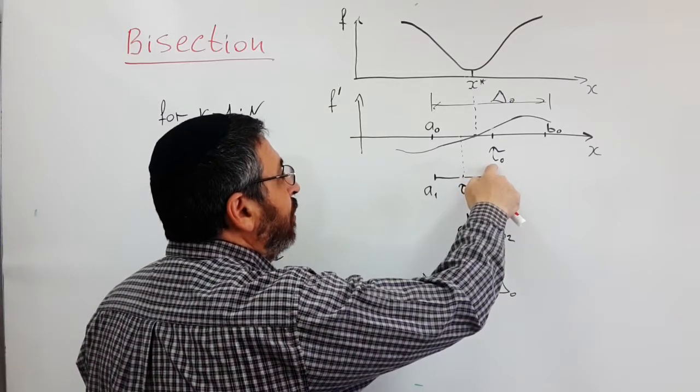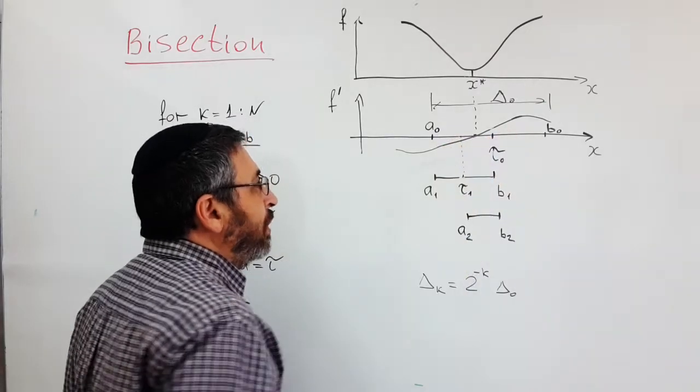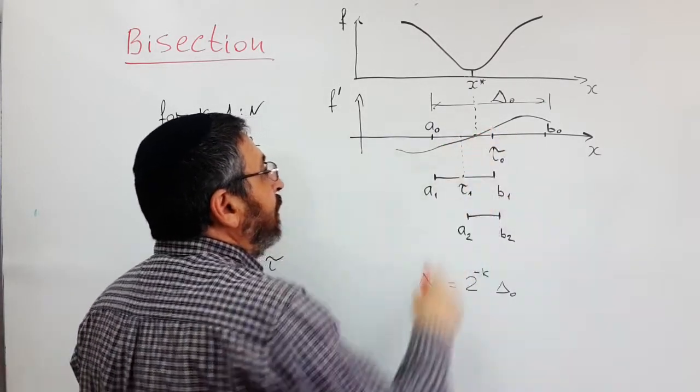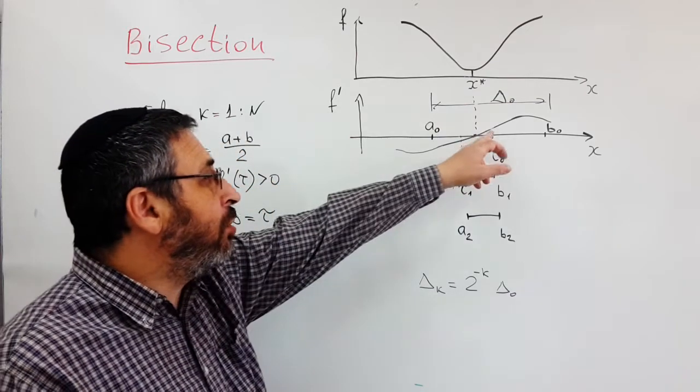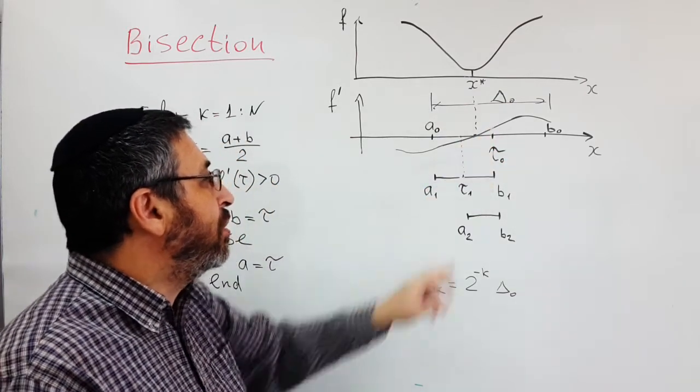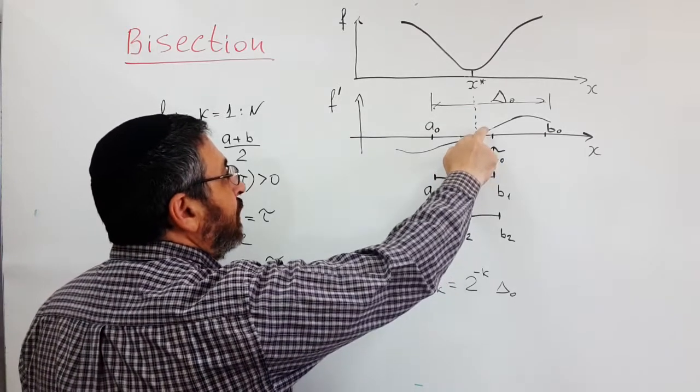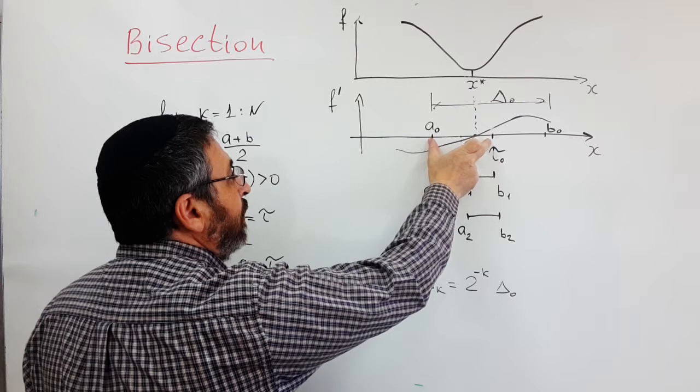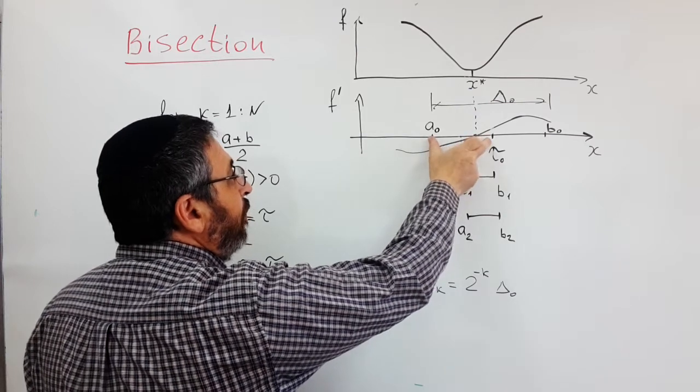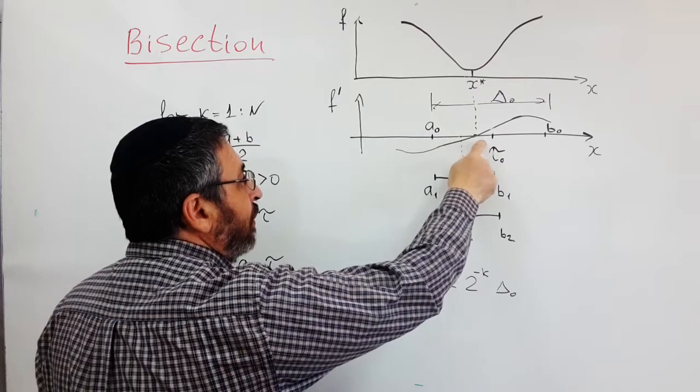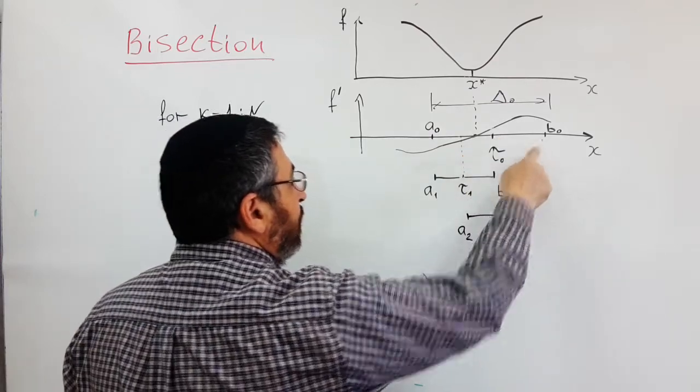We take the middle point of the interval [a₀, b₀] and look at the sign of our function at this point. If the sign is opposite to the sign at a₀, we know that the root is located on the left sub-interval, otherwise on the right.